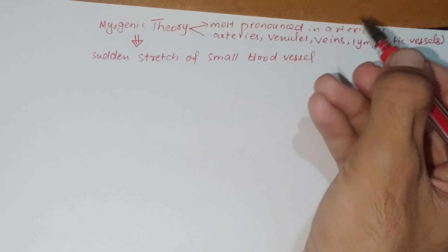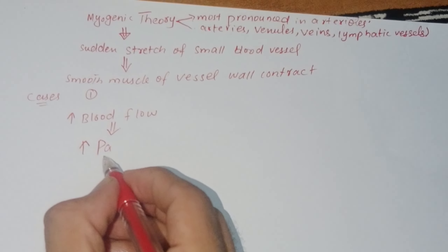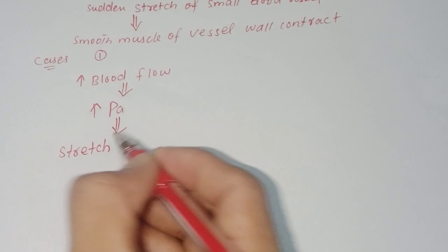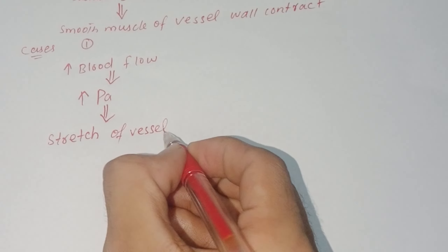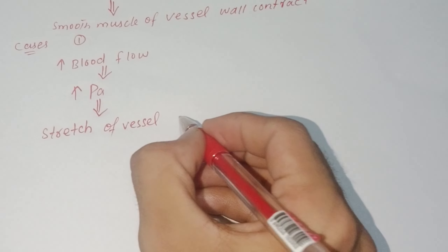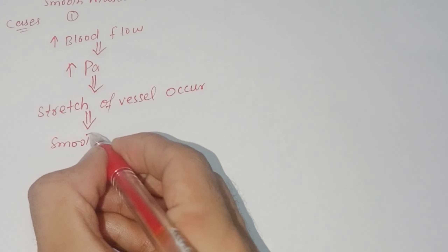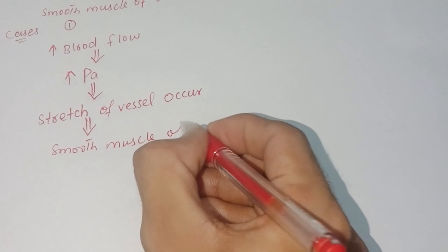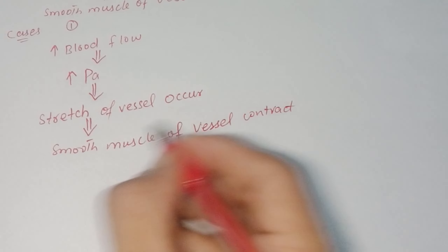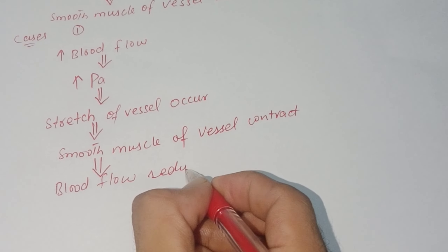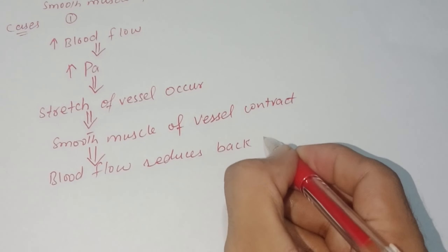Case one: when blood flow increases, arterial pressure increases. The myogenic theory responds with a stretch of the vessel, causing smooth muscle contraction, which reduces blood flow back to normal.